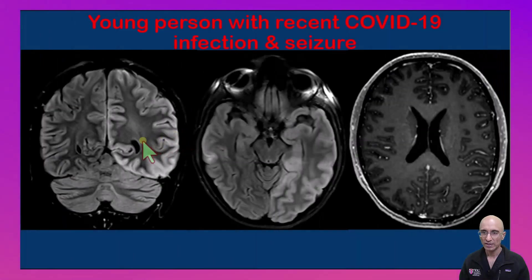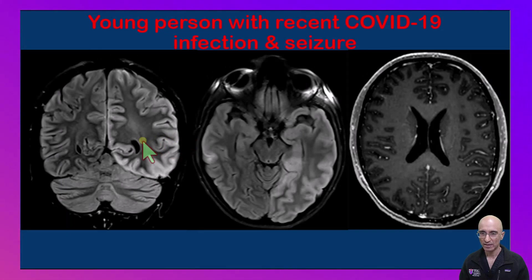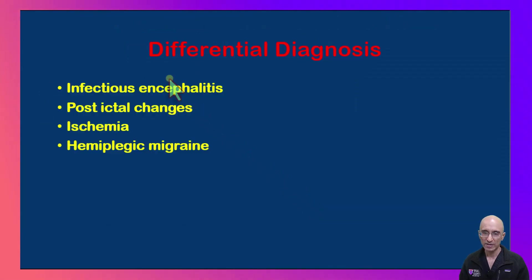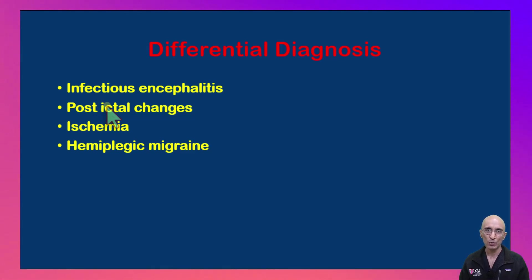So we are dealing with a young patient who has increased FLAIR hyperintensity in the left cerebral hemisphere cortex with increased leptomeningeal enhancement. Differential diagnosis based on the clinical presentation of headache and seizures would include infectious encephalitis, post-ictal changes, ischemia, and hemiplegic migraine.